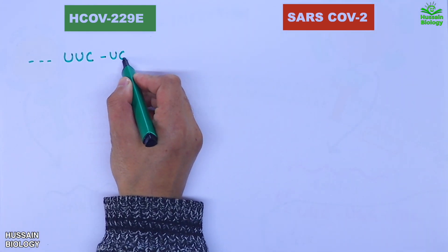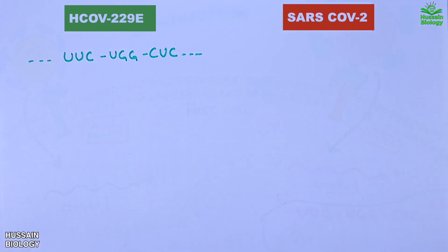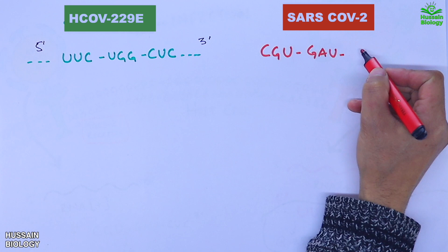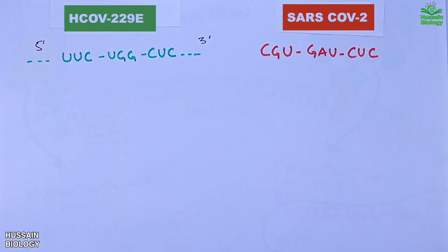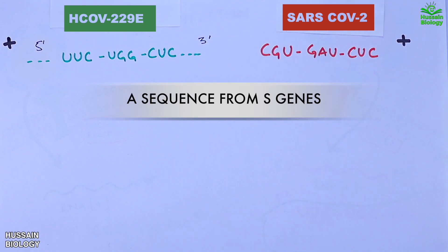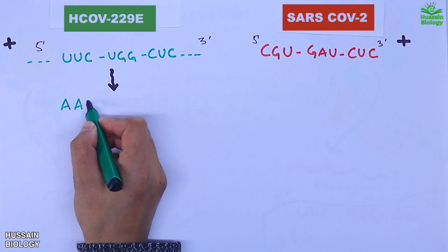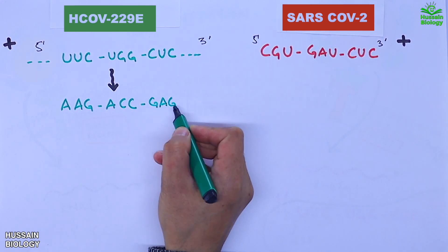Here on the left we have 229E virus, on the right we have SARS-CoV-2 virus. Like we have already seen, a sequence of interest on 229E virus as UUC, UGG, CUC, and on SARS-CoV-2 virus we have CGU, GAU, and CUC. Both are present in the same host cell in the form of positive strand. First we convert the 229E virus positive strand into negative strand as AAG, ACC, and GAG.